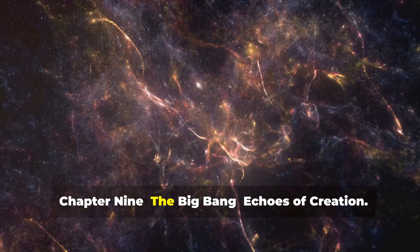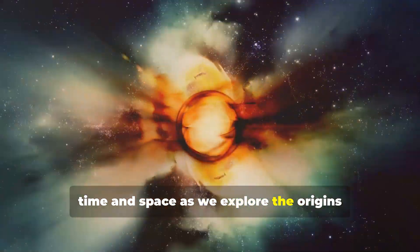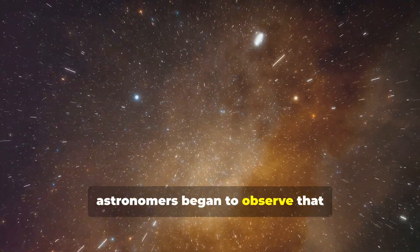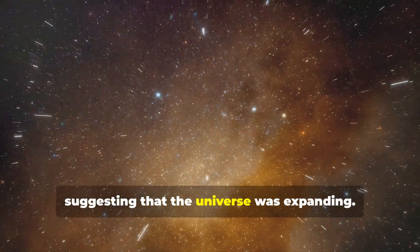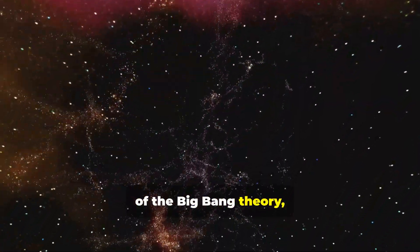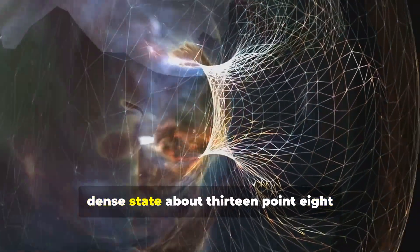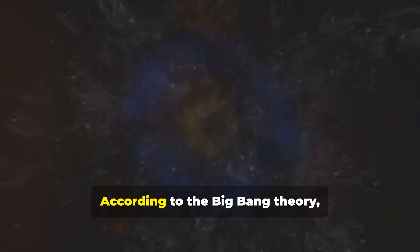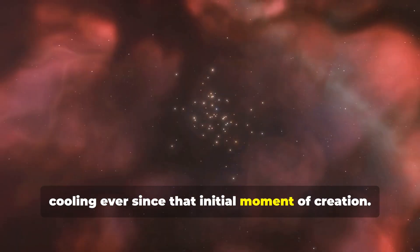Chapter nine, the big bang echoes of creation. Prepare to journey to the very edge of time and space as we explore the origins of the universe itself. In the early 20th century, astronomers began to observe that galaxies were moving away from us, suggesting that the universe was expanding. This observation led to the development of the big bang theory, which proposes that the universe originated from an extremely hot, dense state about 13.8 billion years ago. According to the big bang theory, the universe has been expanding and cooling ever since that initial moment of creation.